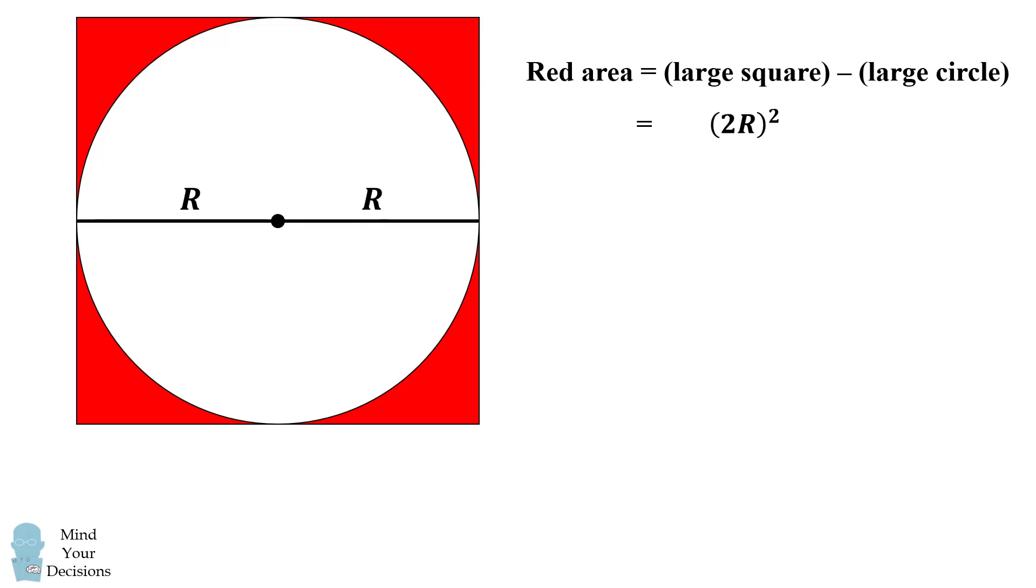The area of the large circle is pi r squared. This simplifies to be 4r squared minus pi r squared, which is then r squared times the quantity 4 minus pi.